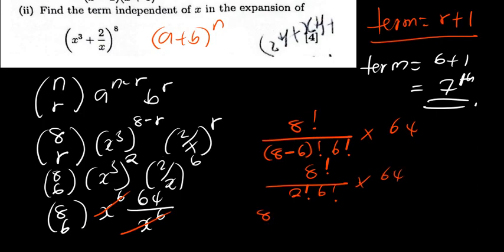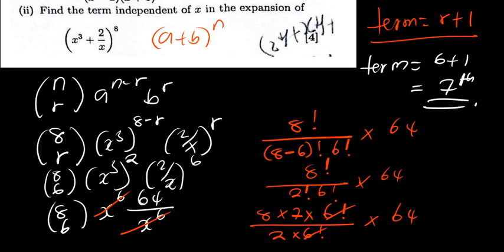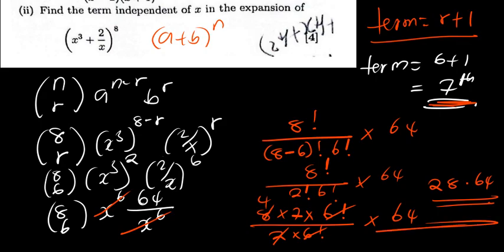So 8 factorial is 8 times 7 (stopping there since 6 factorial cancels). 2 factorial is just 2. The 6 factorials cancel. Then 64 divided by 2 is 32, and 32 times 7 — wait, 8 times 7 is 56 divided by 2 is 28. So 4 times 7 is 28, and the coefficient of the term independent of x is 28 times 64. Initially when they ask about the term independent of x, you just find the term. But when they ask about the coefficient, that's when you go further and simplify to get the final answer.